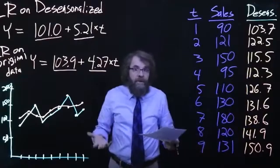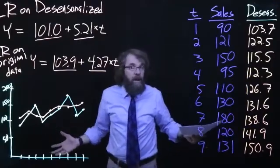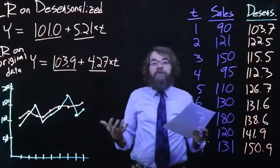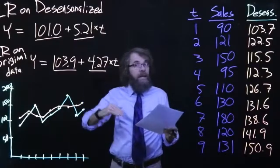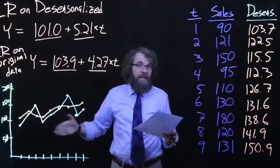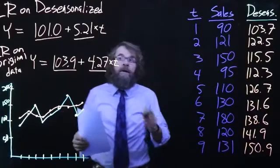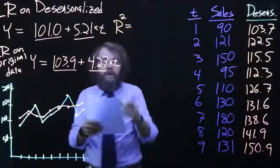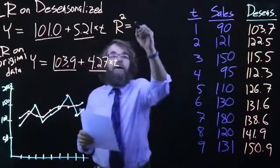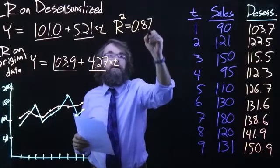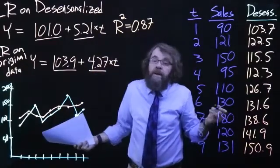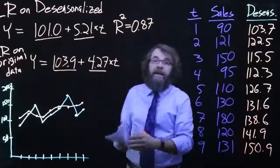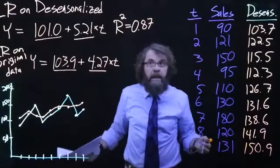And then there's another thing that you may remember, you may have blocked out from your studies of linear regression. And that is we have something called an r-squared value, which tells us the percentage of changes in y that are explained by changes in the independent variable. So when we do it on the de-seasonalized data, we get an r-squared value of 0.87. R-squared values can only go as high as one, and so to get an r-squared value that's basically 0.9, that is a very high degree of correlation.